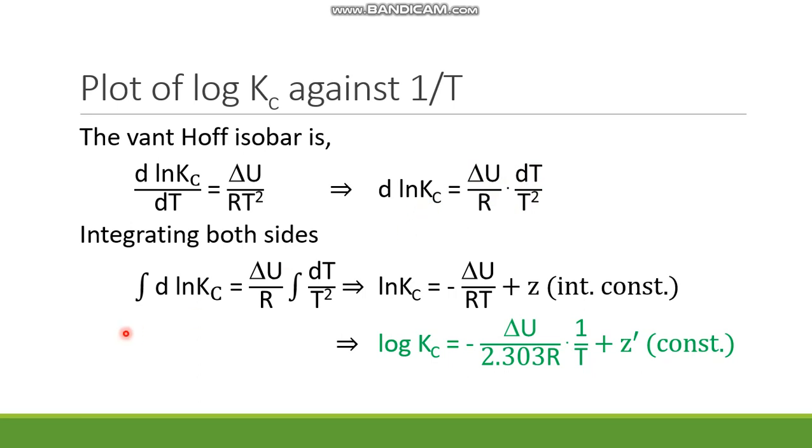Integrating without limit, here you get ln Kc and here you get minus delta U by RT plus Z. If natural log is converted into log base 10, then it becomes log Kc equals minus delta U by 2.303R into 1 by T plus Z prime. Z prime means Z by 2.303, which is yet another constant.